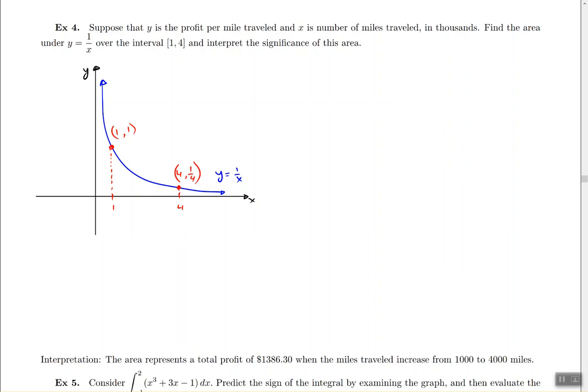So what we're doing in this problem is looking for the area underneath the graph of y equal to 1 over x between the graph, the x-axis, and the numbers 1 and 4. So basically that's the area that we're looking for.